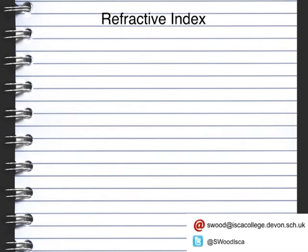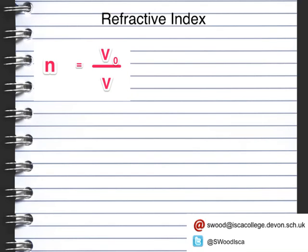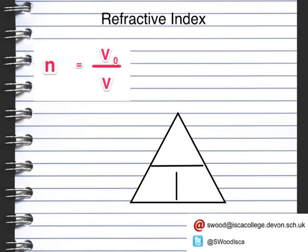We also need to be able to rearrange this equation. You may have the refractive index of a material and know that the speed of light in a vacuum is 300 million metres per second, but be asked to work out the speed of light through a medium. To rearrange, we put the values into a triangle: V₀, N, and V. To calculate V, you do V₀ divided by N. To calculate V₀, you do N multiplied by the speed of light in the medium.